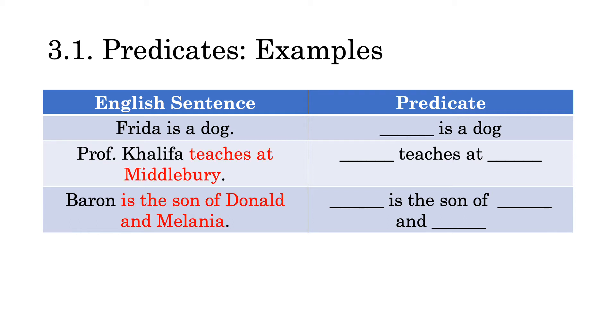Note that first order logic has a slightly narrower definition of what a predicate is than we do in English. So in English, Middlebury would be part of the predicate in the second sentence. Similarly, Donald and Melania would be part of the predicate in the third sentence. By contrast, when we look at first order logic, we see that the predicate has no reference to any individual constants at all. So in the second case, teaches at is the predicate. And in the third case, is the son of blank and blank is the predicate.